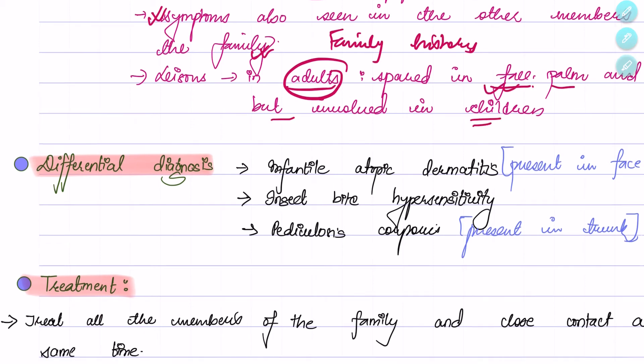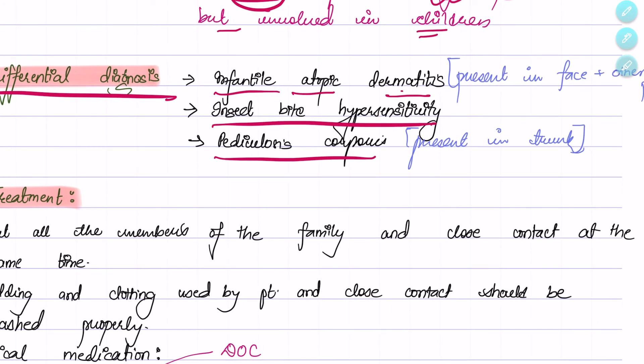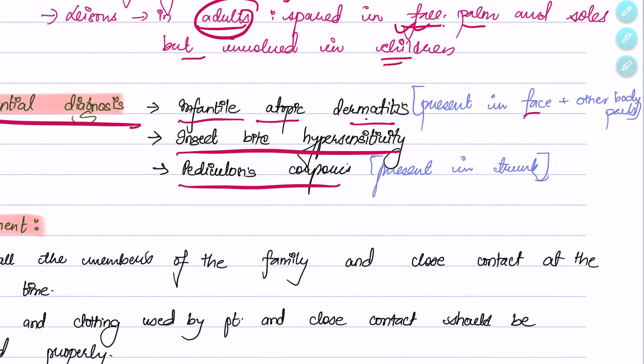The differential diagnosis of scabies includes infantile atopic dermatitis, insect bite hypersensitivity, and pediculosis corporis. In infantile atopic dermatitis, lesions are seen in face and other parts of the body. Pediculosis corporis is seen in the trunk.